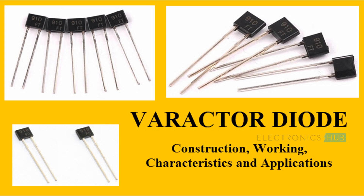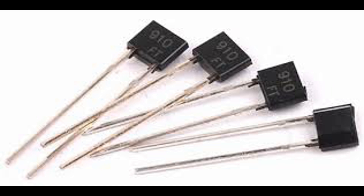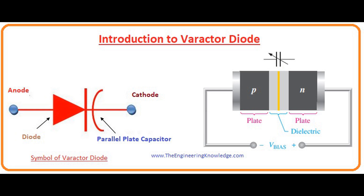Modulators: Varactor diodes modulate the frequency or phase of a carrier signal. They are used in communication systems for frequency modulation (FM) and phase modulation (PM). Electronic tuning: Varactor diodes enable electronic tuning in place of mechanical tuning components.